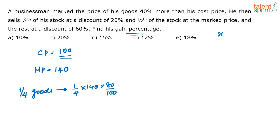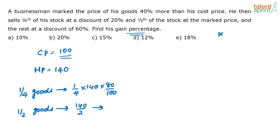He is selling half of the stock at the marked price. The marked price of half the goods is 140 divided by 2, and he is selling it for exactly that amount — 140 by 2, which is 70 rupees.